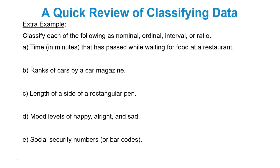So let's do a little extra example here of levels of measurement. So what about time in minutes that has passed while waiting for food at a restaurant? Is there a zero starting point? Yes, you can't have negative time. So the data values are numeric. There is a zero starting point. So guess what? That's ratio. What about ranks of cars by a car magazine? Well, this is actually going to be ordinal because there is orders and rankings. Length of a side of a rectangular pen. When you're dealing with length there is always a zero starting point. There is always a zero starting point. It's numeric so we're dealing with ratio again.